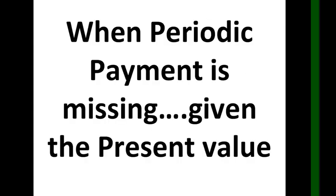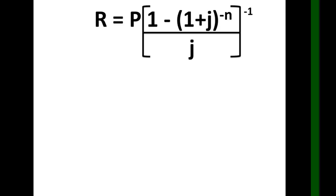Now let's look at the case when the periodic payment is missing but the given is the present value. For this portion, we will use the formula: r equals P times the quantity 1 minus (1 plus j) raised to negative n, over j, raised to negative 1. Just follow the formula and substitute the given values.